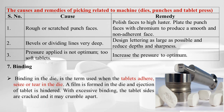Binding in the die is the term used when the tablet adheres, seizes, or tears in the die. Binding is usually due to excess moisture in the granules — a film is formed in the die and ejection of the tablet is hindered. With excessive binding, the tablet sides are cracked and it may crumble apart.